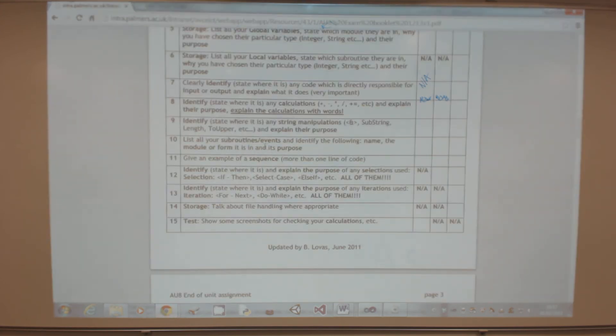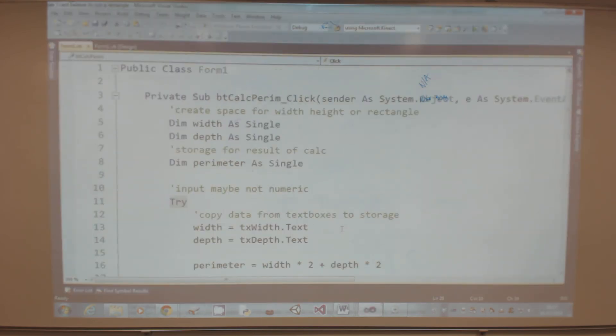The next bit says identify or list all your subroutines. You've only got one in this one - it's this. Just say what the purpose of it is: it's a bit of code that runs when the user clicks and it does the calculation. There isn't much to say about it.